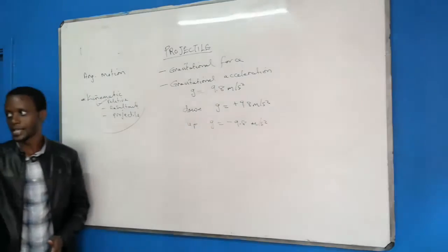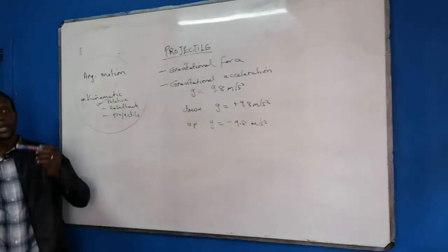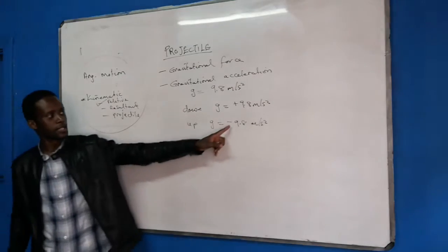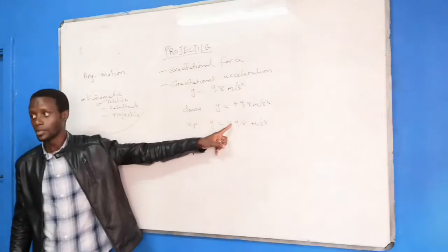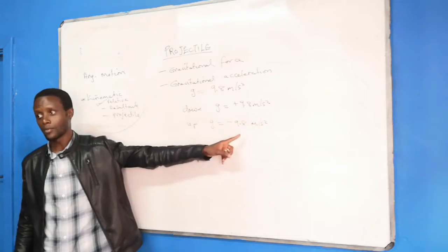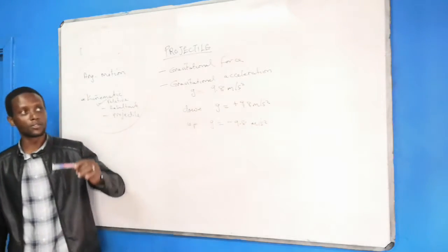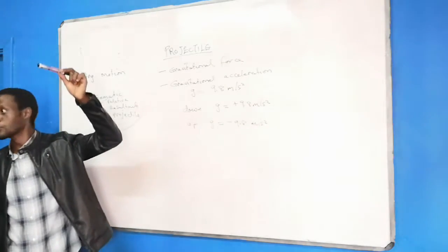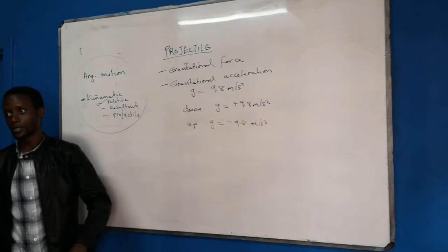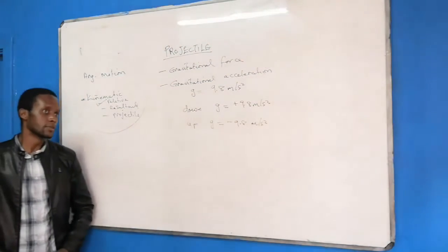When you throw something upwards, the object will be going up but its velocity will be reduced every second by 9.8 until the velocity of that object cannot push it upwards anymore, and therefore it will fall down.